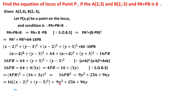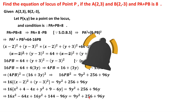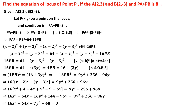Substituting: 16[(x-2)² + (y+3)²] = 9y² + 256 + 96y. Expanding: 16[x² + 4 - 4x + y² + 9 - 6y] = 9y² + 256 + 96y, which gives 16x² - 64x + 16y² + 144 - 96y = 9y² + 256 + 96y. Transposing all terms to the left: 16x² - 64x + 7y² - 192y - 112 = 0. Wait — after simplifying, the equation of the locus is 16x² - 64x + 7y² - 48 = 0.